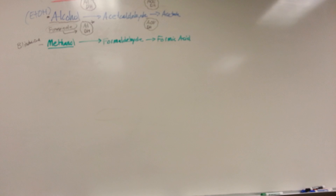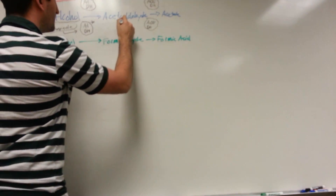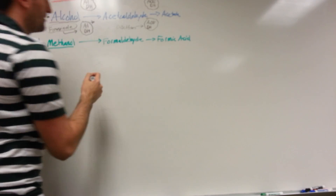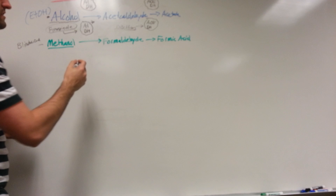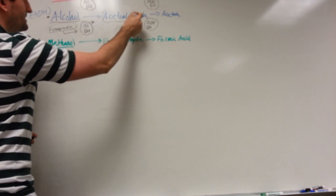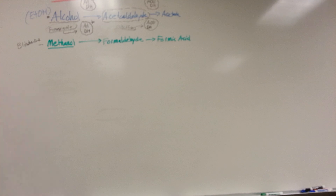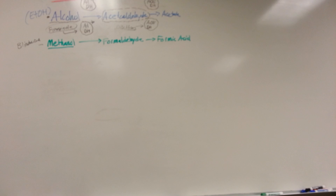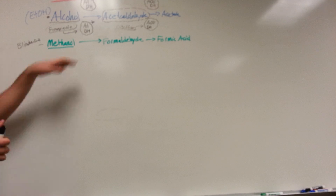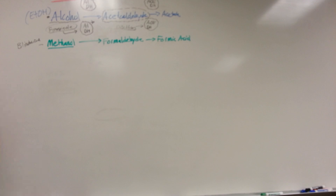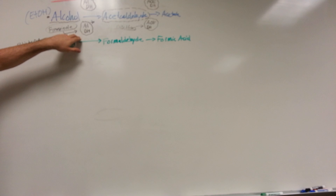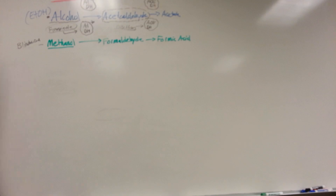To recap: disulfiram inhibits acetaldehyde dehydrogenase, causing a buildup of acetaldehyde that produces toxic symptoms when an alcoholic drinks. The theory is that associating those symptoms with drinking reduces alcohol intake — though the problem with disulfiram is compliance, since an alcoholic won't want to take a drug that makes them sick when they drink. Fomepizole, on the other hand, is an excellent alcohol dehydrogenase inhibitor used for methanol and ethylene glycol poisoning.